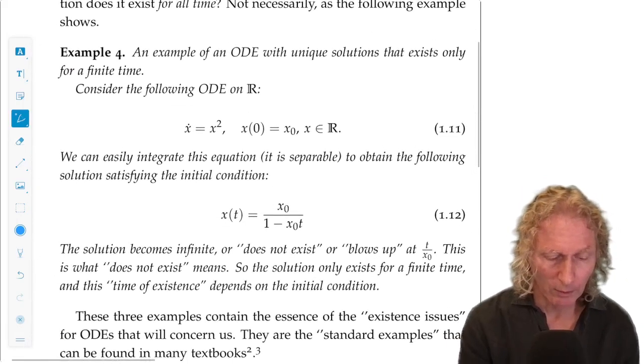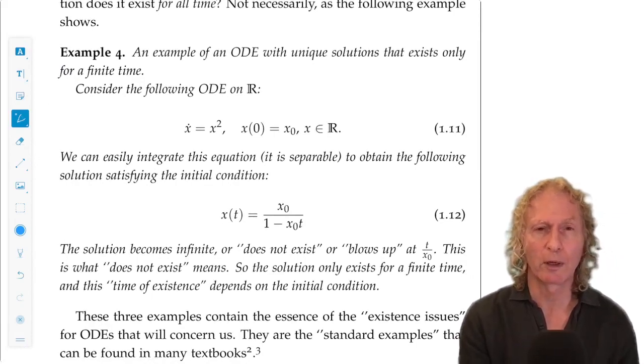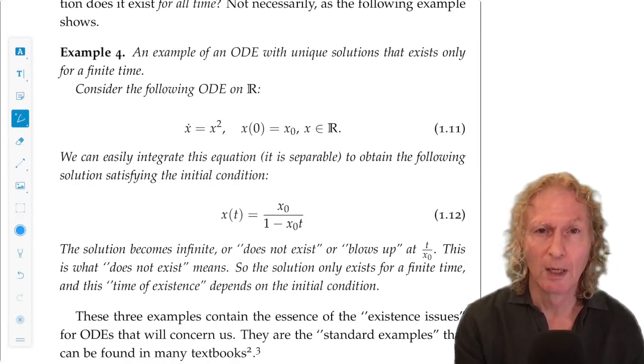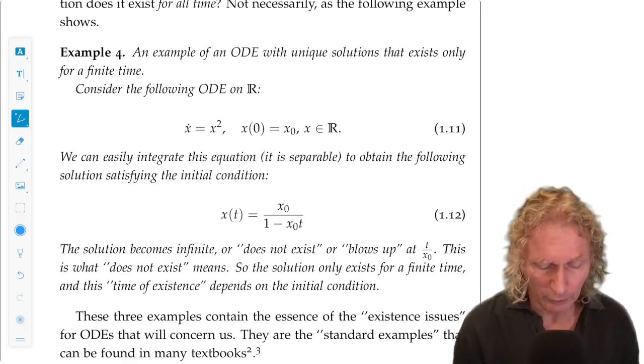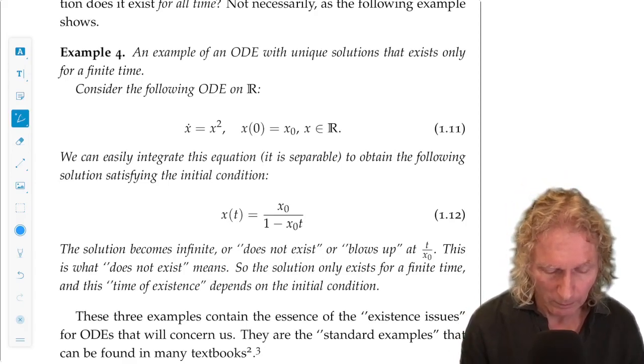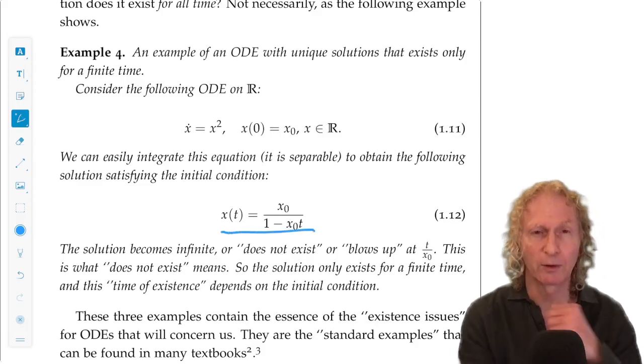Well, here's an ODE, x dot equals x squared, x is in the real line. We consider a general initial condition, x(0) equals x naught. The solution for that ODE is given by this equation.